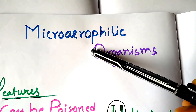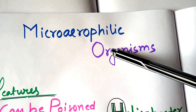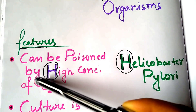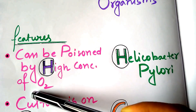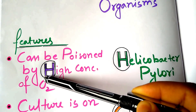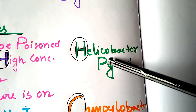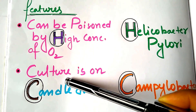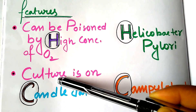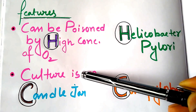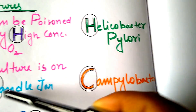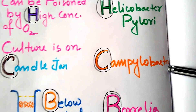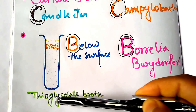Less oxygen tension is optimum for them. They can be poisoned by high concentration of oxygen — the keyword is 'high', H for Helicobacter pylori. Their culture is done on a candle jar — C for candle jar, C for Campylobacter.